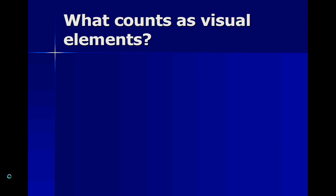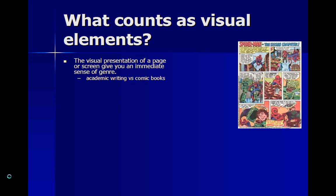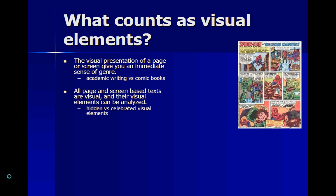So what counts as visual elements? According to the author, the visual presentation of a page or screen gives you an immediate sense of genre. If you see a certain structure, you might say, 'Oh, that's poetry.' If you see something double-spaced in font size 12, you'll think it's student writing. And whenever you see something very colorful, you'll think it's either a children's book or a comic book. The author says all page and screen-based texts are visual and their elements can be analyzed, whether a genre hides visual elements like academic writing, celebrates them like comic books, or falls somewhere in between like a web page.